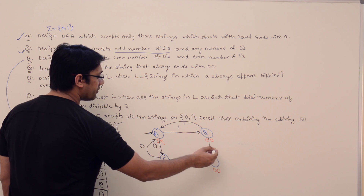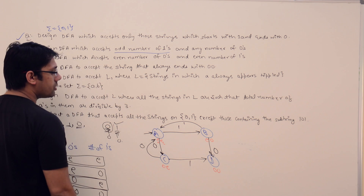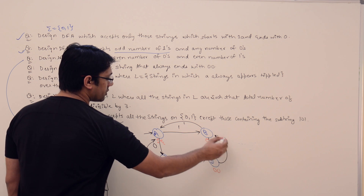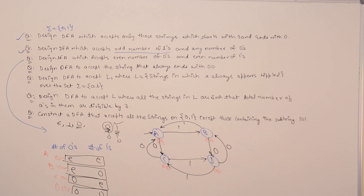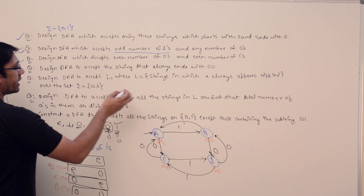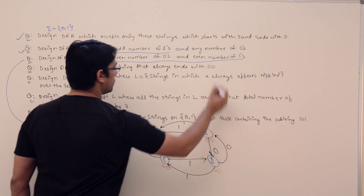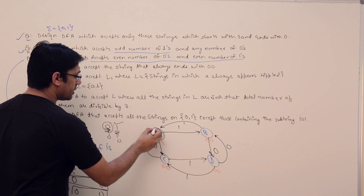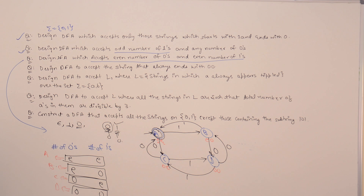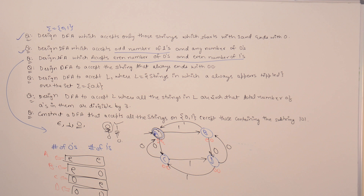At state D, both zeros and ones are odd. If you get one more 0, the number of zeros becomes even. If you get one more 1, the number of ones becomes even. We need to accept even zeros and even ones, and only state A represents that condition. Therefore, state A becomes the final state. This DFA represents the language where both the number of zeros and the number of ones are even.